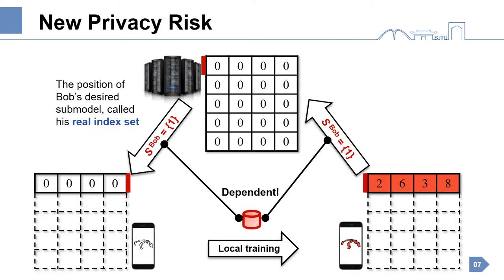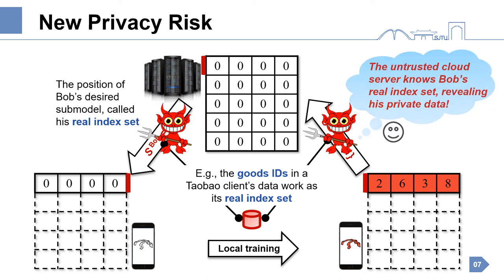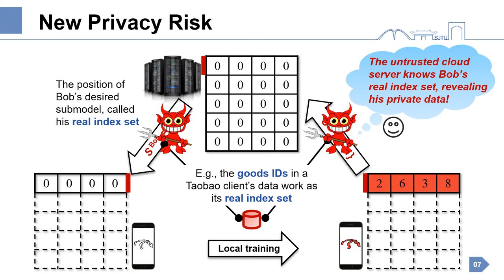Just as every coin has two sides, the submodel framework not only improves efficiency but also brings new privacy risks. The position of a client's desired submodel in the full model, called the real index set, depends on the client's prior data. For example, the goods IDs in a Taobao client's data serve as its real index set. To download a submodel and upload the submodel update, the untrusted cloud server can learn the client's real index set and further reveal its prior data. This breaks the privacy guarantee of federated learning.